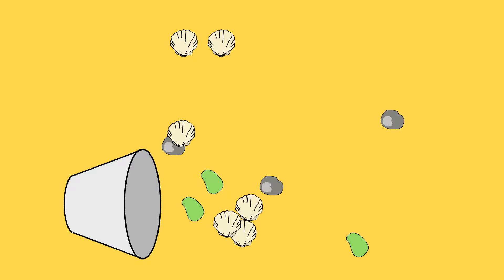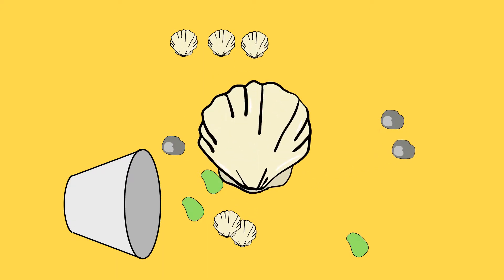You can sort into more than two piles. This time, we have three piles. But let's keep sorting. This is a shell. This is a rock. And this shell is super cool looking. It goes over here with the other shells.